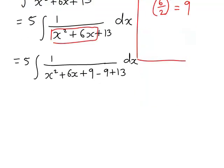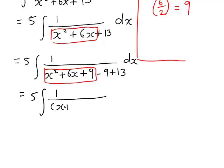This part, the x² plus 6x plus 9, will now factorize as a perfect square. In fact it equals (x plus 3)². So the integral is rewritten as 5 times the integral of 1 divided by (x plus 3)² plus 4.